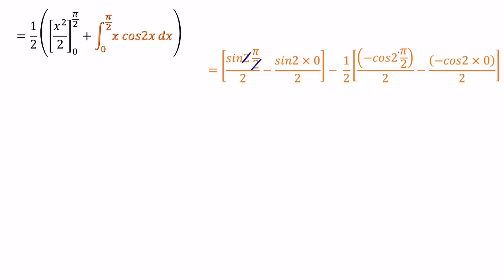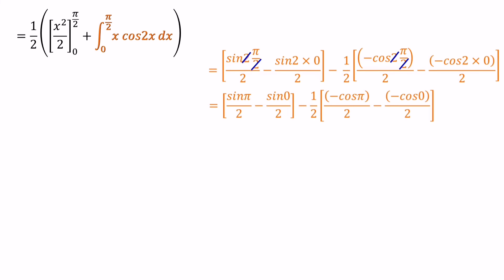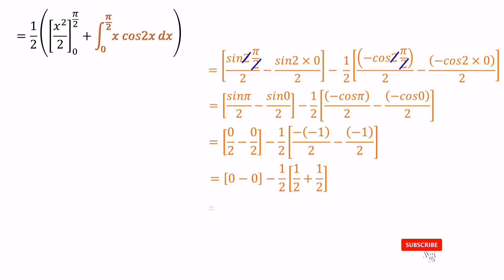Sin pi equals 0. Sin 0 equals 0. Cos pi equals minus 1. Cos 0 equals 1. So we can write 0 over 2 minus 0 over 2, minus half within bracket minus times minus 1 over 2, minus minus 1 over 2. Then we can simplify and get the result minus half.